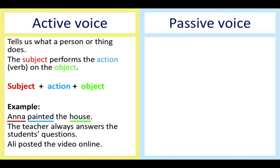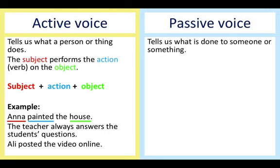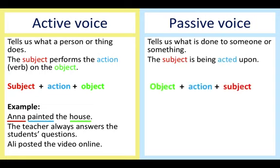Passive voice tells us what is done to someone or something. The subject is being acted upon. The sentence structure is object plus the action plus the subject.